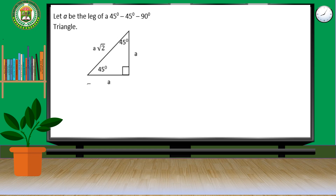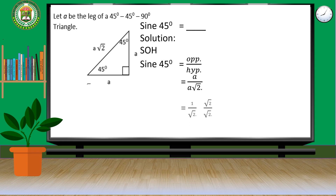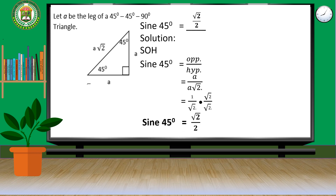Let us check your work. Let us find first the 6 trigonometric ratios of angle 45 degrees. To find the exact value of sine 45 degrees, we use the mnemonic 'So': sine 45 degrees equals opposite over hypotenuse. Substituting the opposite side A and hypotenuse A square root of 2, we simplify by canceling A to get 1 over square root of 2. Rationalizing by multiplying by square root of 2 over square root of 2, sine 45 degrees equals square root of 2 over 2.